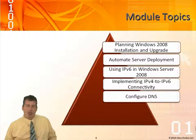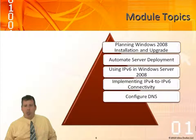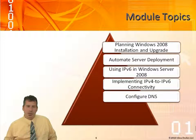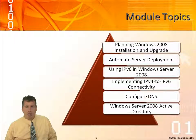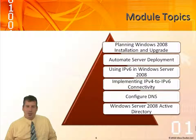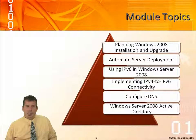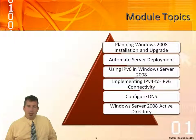Then we'll talk about configuring DNS and look at the differences between Windows Server 2003 and 2008 — things like background zone loading and the global name zone. Then Windows Server 2008 Active Directory: we'll look at new infrastructure such as read-only domain controllers, and the functional levels associated with Active Directory. Windows Server 2008 domain functional level will allow us to implement PSOs — fine-grained password policies that we can implement on users and groups — and we'll be talking about shadow groups as well.